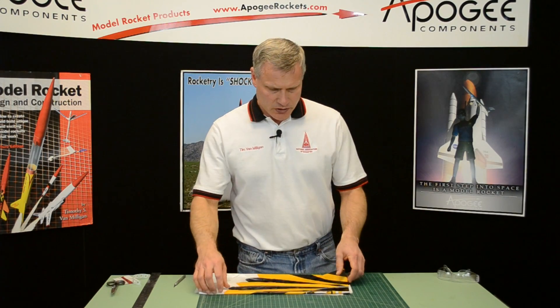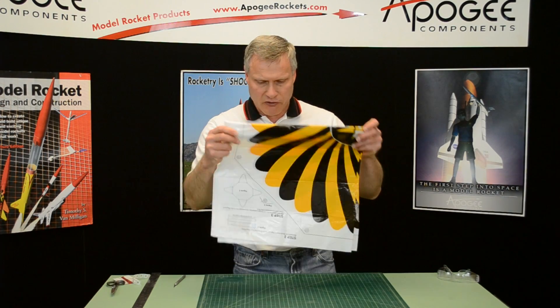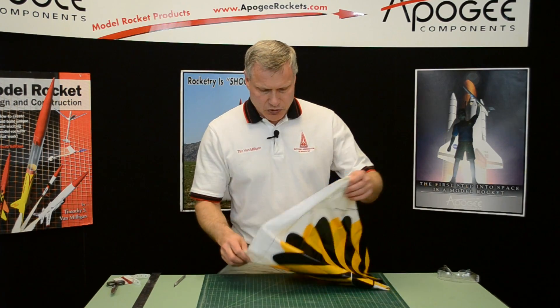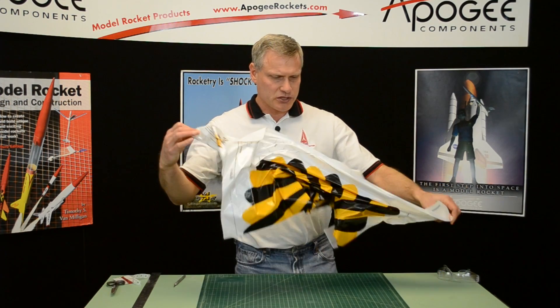This is parachute construction. It's typical of any parachute you ever made. The first thing we'll do is cut the parachute out of the plastic.